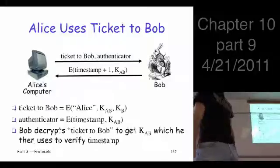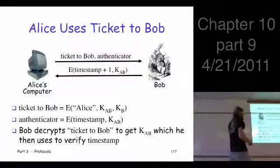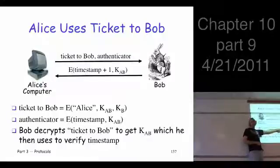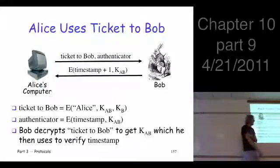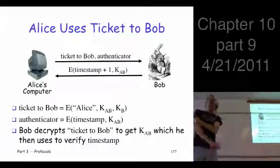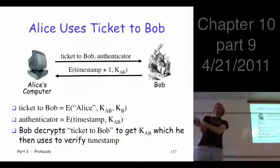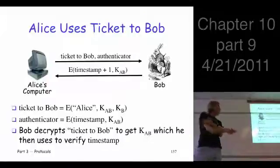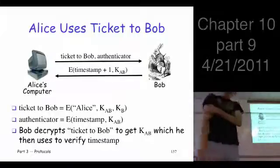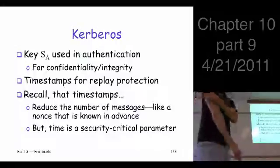Now just a reminder what was in the ticket here. The ticket said you should be talking to Alice. Here's the key you should use to communicate with Alice, which you already did. And it's encrypted with this key that Bob knows. Mutual authentication. Two messages, right? And we've got a session key. Pretty slick.